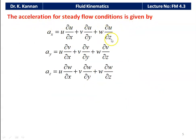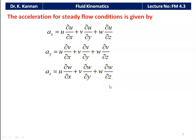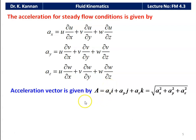For steady flow conditions, there is no change in velocity with respect to time, so the time-dependent parameter is deleted: ax = u(∂u/∂x) + v(∂u/∂y) + w(∂u/∂z), ay = u(∂v/∂x) + v(∂v/∂y) + w(∂v/∂z), and az = u(∂w/∂x) + v(∂w/∂y) + w(∂w/∂z). The resultant acceleration a = axi + ayj + azk = √(ax² + ay² + az²), which is also useful for solving problems.